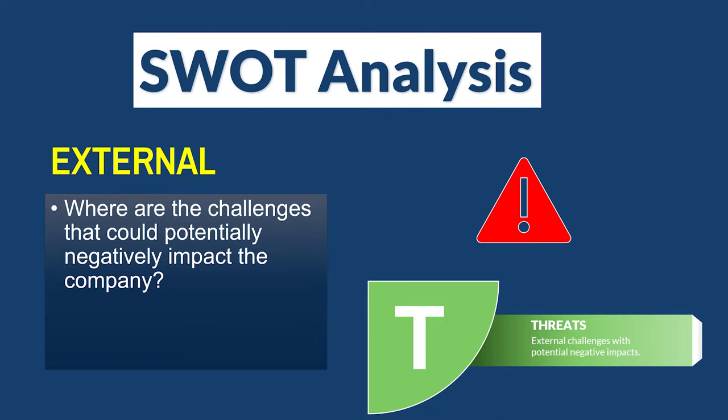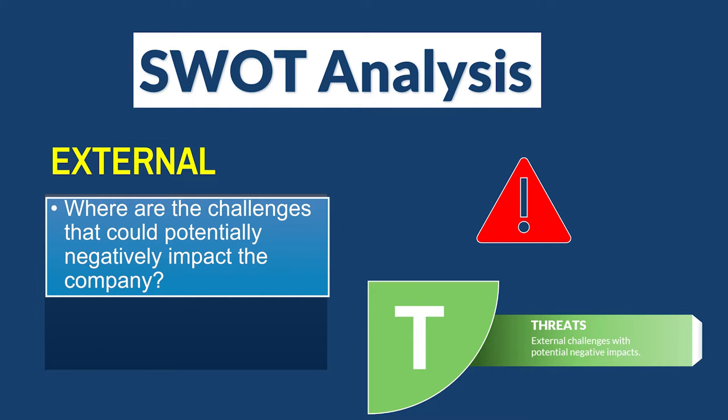Now let's look at threats — external, outside of the organization. Legal aspects of business are always a threat because laws are always changing. A law could change and drastically impact an organization, especially based on the type of business you have. We also look at the competitive landscape. Is there a threat of new entrants? Are companies easily joining the landscape and taking market space? Are our competitors merging and becoming bigger and taking more market space? Those can be threats to our company.